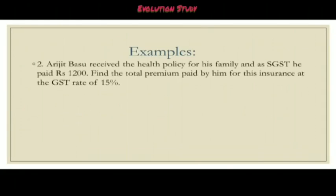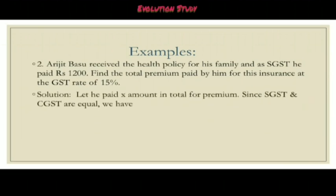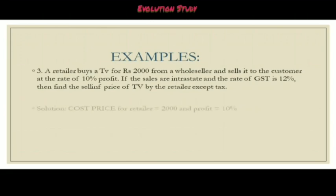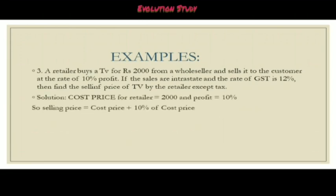Another example: Origin Basu received a health policy for his family, and as GST he paid rupees 1200. Find the total premium paid by him for his insurance at the GST rate of 15 percent. The solution: let him have paid X amount in total for the premium. Since SGST and CGST are equal, we have 15X divided by 100 equal to 1200 plus 1200, which means X equals 24000 divided by 15, which means rupees 16000.